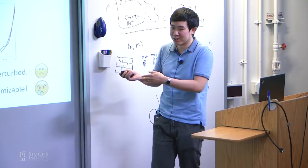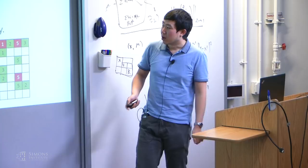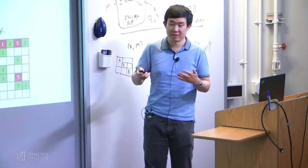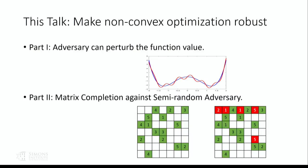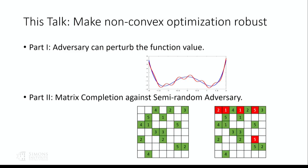In the first part I will talk about what if the adversary can perturb the function value. In the second part I will talk about some more concrete models of adversarial perturbations. So in the first setting, we are trying to do robust non-convex optimization with a perturbed objective. We have this unknown function capital F — the blue function — which has all the nice properties we want to assume. Capital F is locally optimizable, smooth in the sense that all orders of derivatives exist and are bounded. Local minima are very good solutions, and finding a local minimum of F is what we want to do.